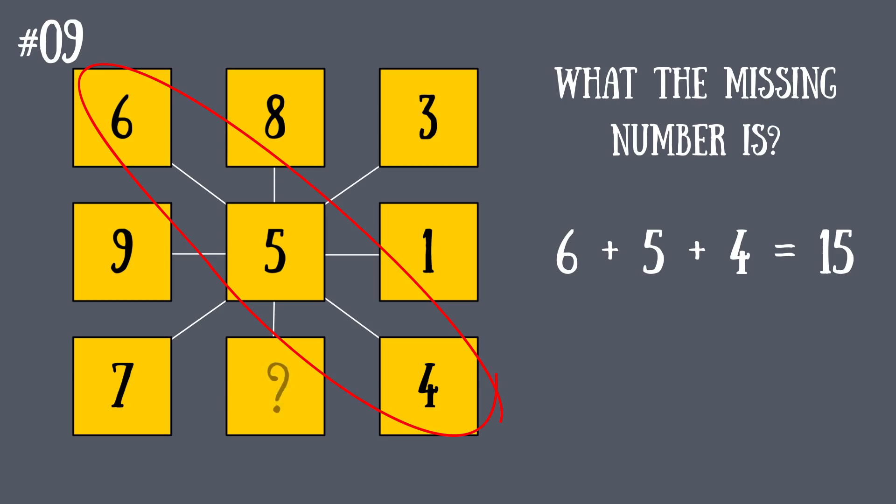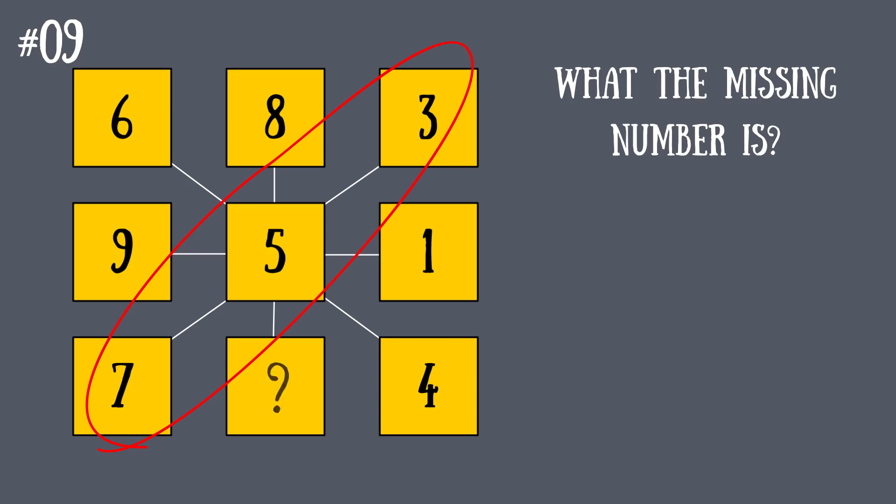3, 5, and 7 gives us 15 as well. So the correct number here is 2: 8 plus 5 plus 2 is 15, just what we need.